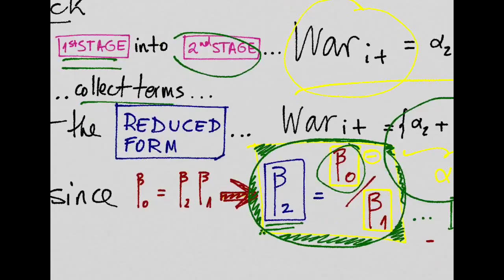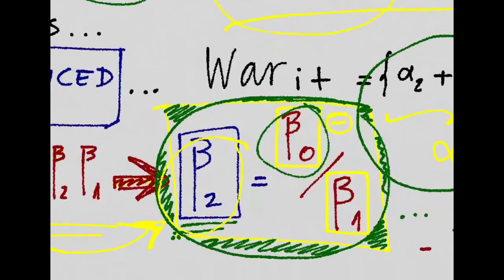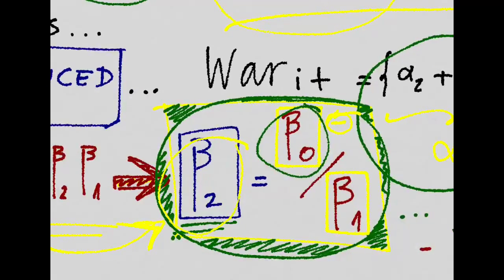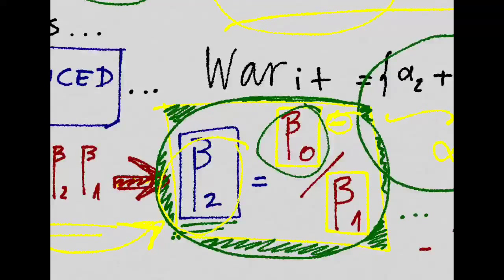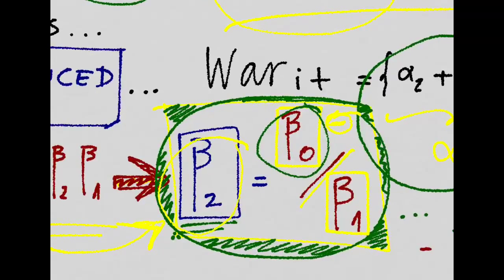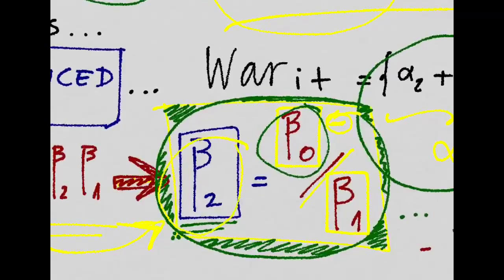So just by simply using this trick, we have a pretty good estimate that's going to be fairly unbiased of beta 2, the impact of economic growth in the probability of war or civil conflict. This is just basically the impact of rainfall patterns in the probability of civil war scaled up or divided by the impact of rainfall patterns in economic growth.